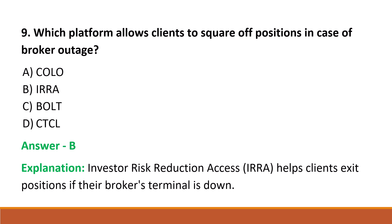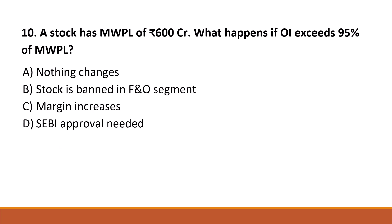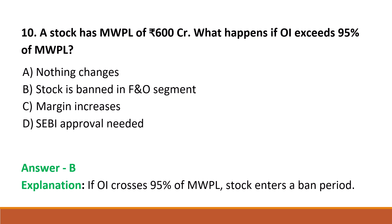Next question: a stock has MWPL of 600 crore. What happens if OI exceeds 95% of MWPL? Option A: nothing changes. Option B: stock is banned in F&O segment. Option C: margin increases. Option D: SEBI approval needed. The correct answer is Option B, stock is banned in the F&O segment.